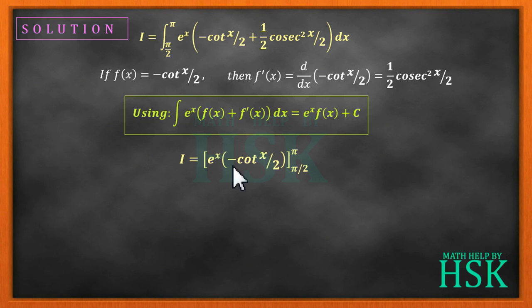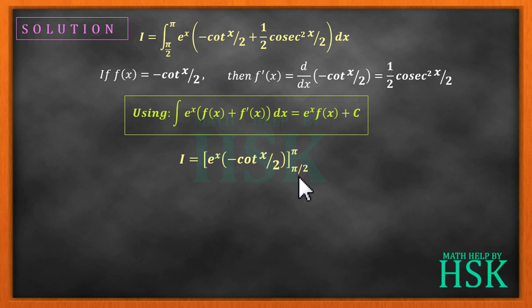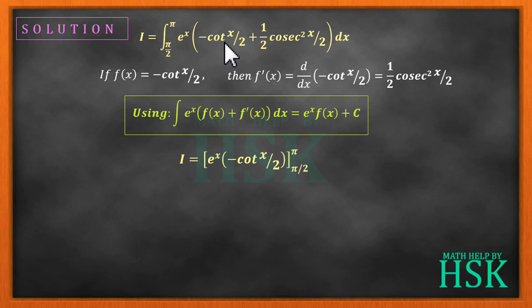We write the value of I as equal to e to the power of x times minus cot(x/2), evaluated from the limit pi by 2 to pi. This is how we obtain the antiderivative simply by applying the formula.